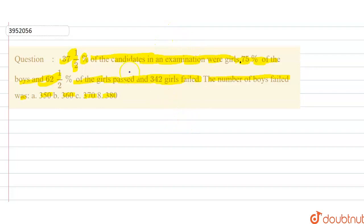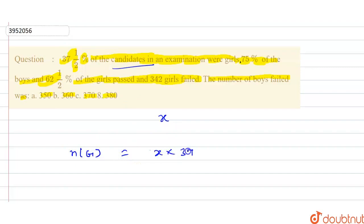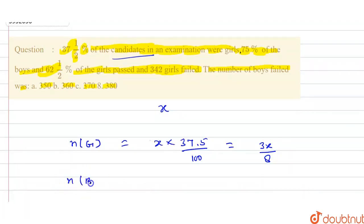Let total candidates be x. The number of girls is 37.5% of total candidates, so number of girls equals x times 37.5 divided by 100, which equals 3x by 8. The number of boys is x minus 3x by 8, which equals 5x by 8.